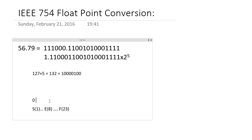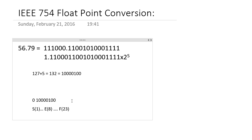We place this 8-bit exponent directly, so we have already completed 9 bits of the IEEE 754 binary number. Now for the 23-bit mantissa, we take the digits after the leading 1 from our normalized form: 1 1 0 0 0 1 1 0 0 1 0 0 1 1 0 0 0 1 and so on.